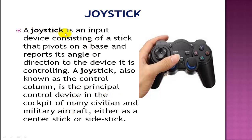Joystick: A joystick is an input device consisting of a stick that pivots on a base and reports its angle or direction to the device. A joystick, also known as the control column, is the principal control device in the cockpit of many civilian and military aircraft, either as a center stick or side stick. A joystick consists of a vertical lever mounted on a base. Moving the lever in different directions moves the cursor. Joysticks are used in game programs or to control robots.